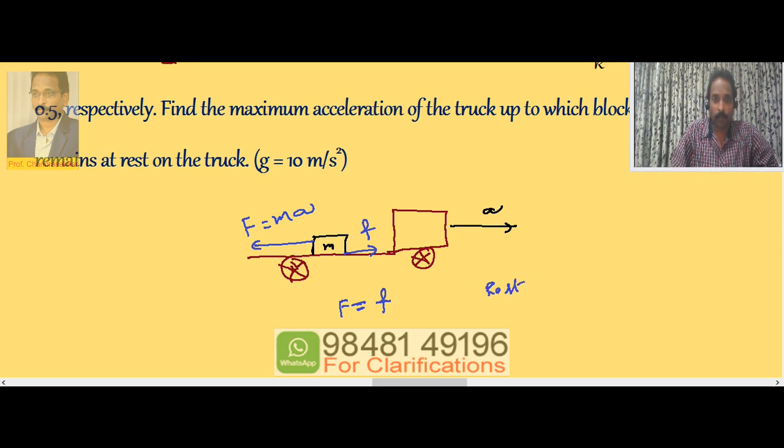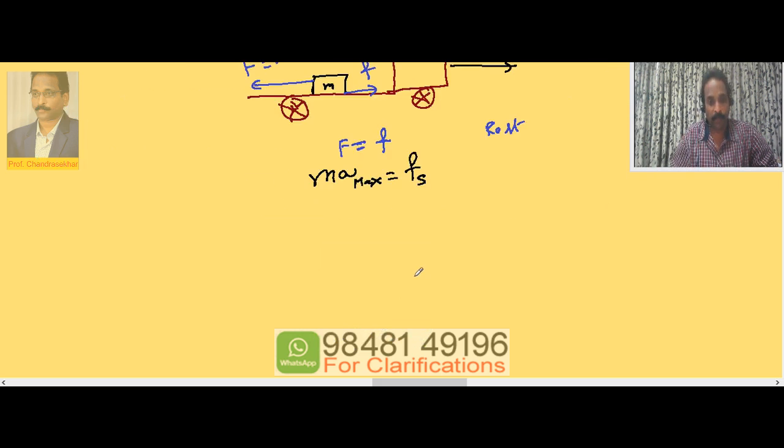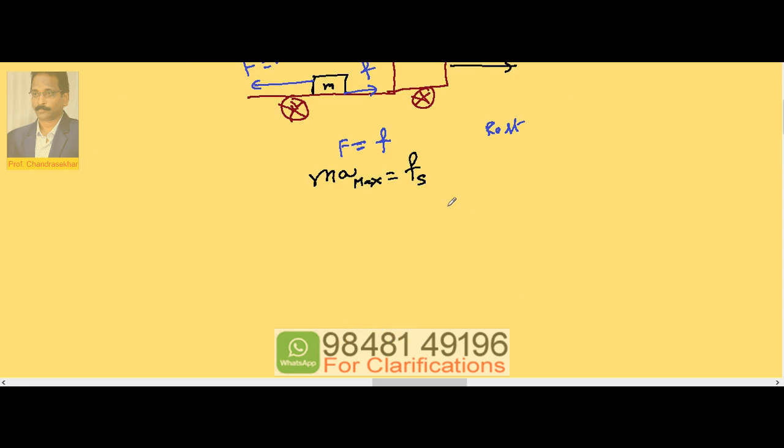Now as A increases, ma increases because A is increasing, the backward pulling force increases. Let us say A is equal to A maximum. This is possible up to Fs because static friction is not a constant force, it is a variable force. As the pulling force increases, friction also increases and reaches the maximum value which is equal to Fs.